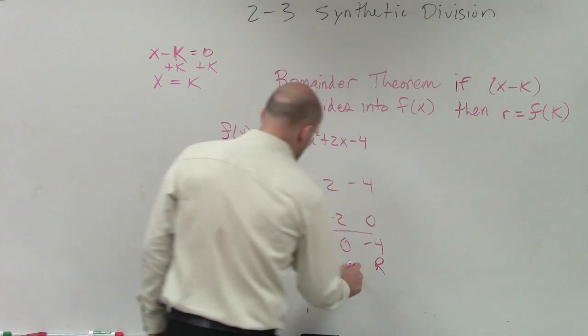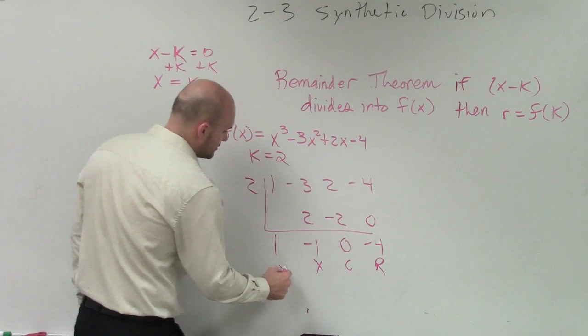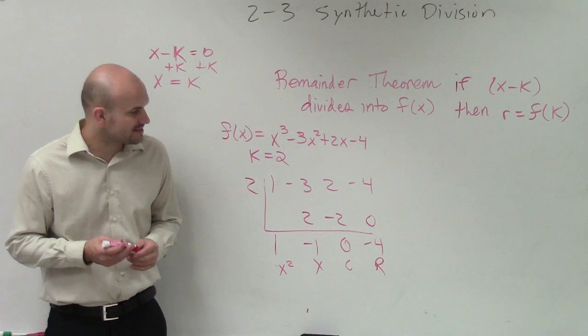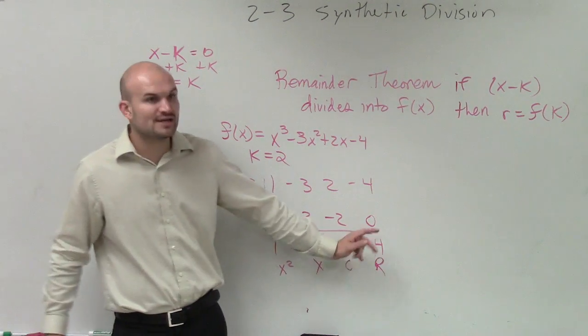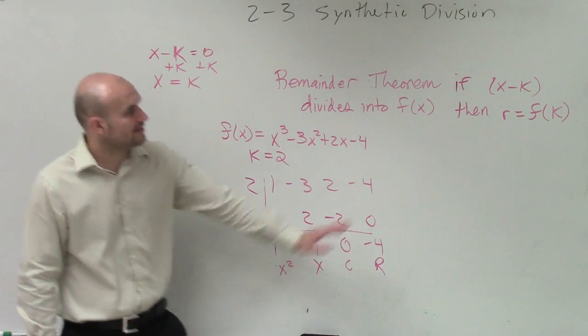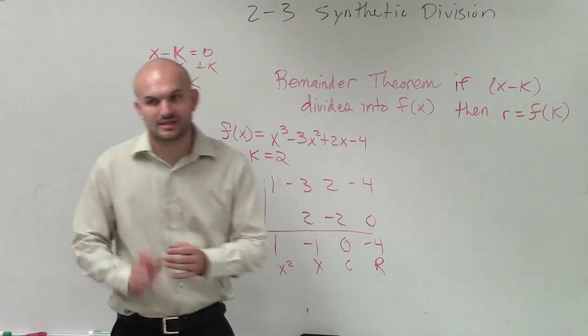So we can say here's the remainder, constant, linear, and quadratic. All right, but what I'm here to show you guys is our r is equal to negative four.